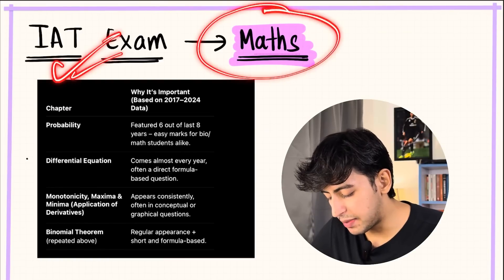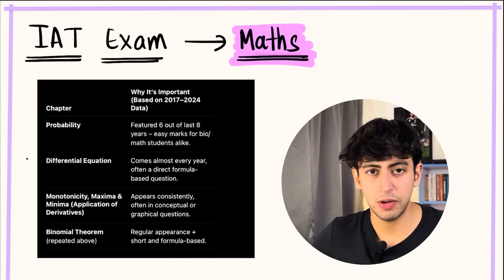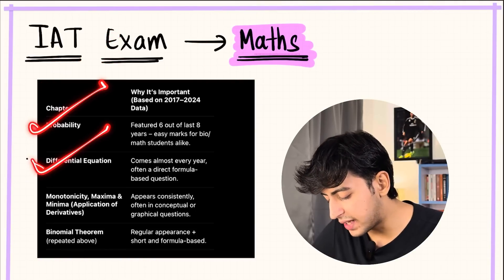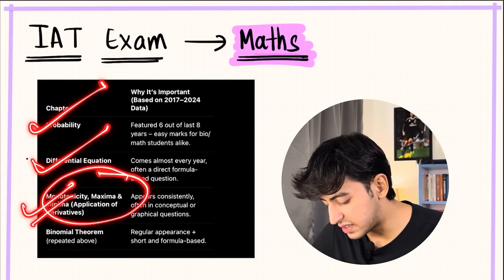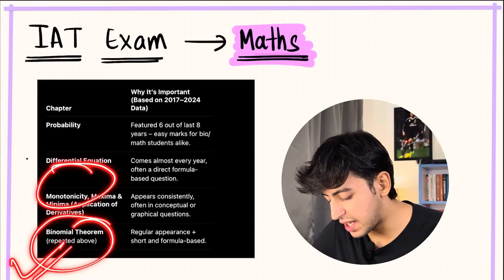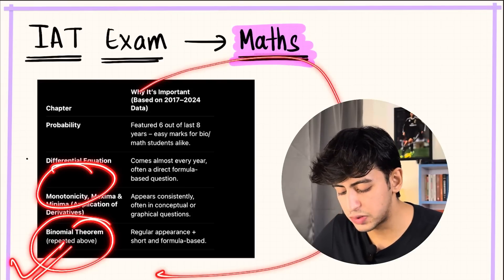Coming to the IAT examination maths section: the most important topics are probability, differential equations, then maxima minima and monotonicity, and then binomial theorem. These four topics are the most important.